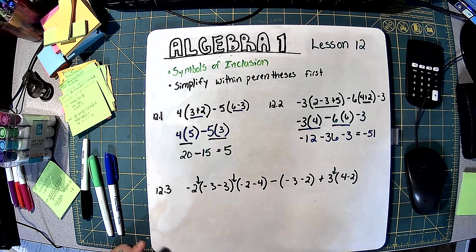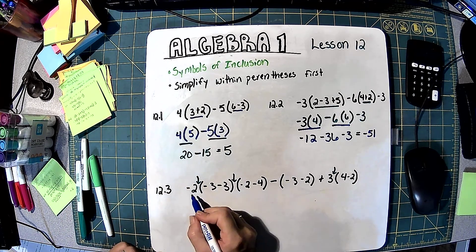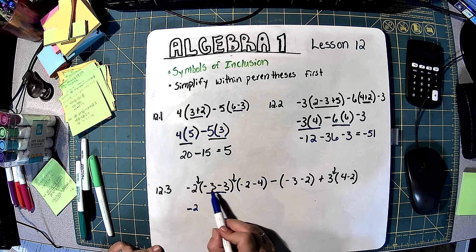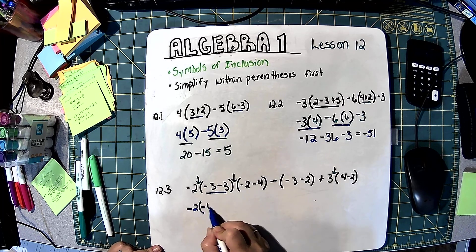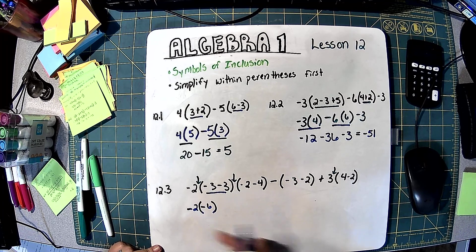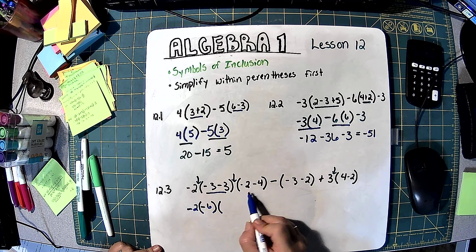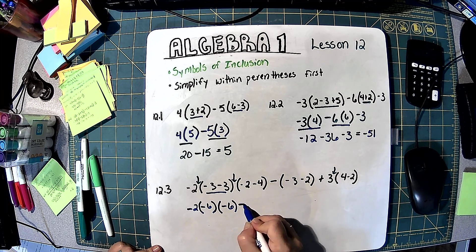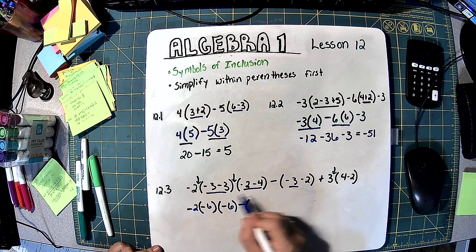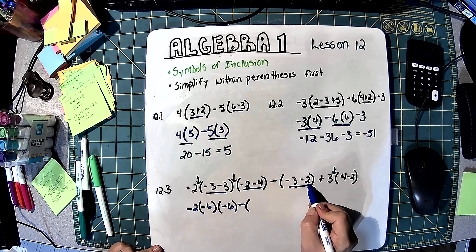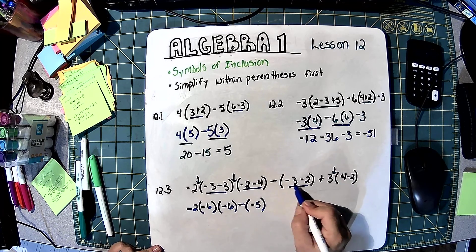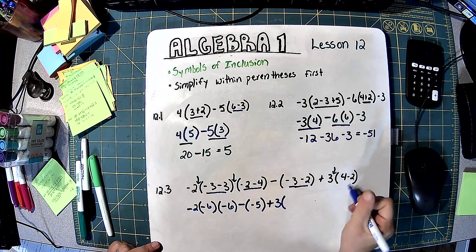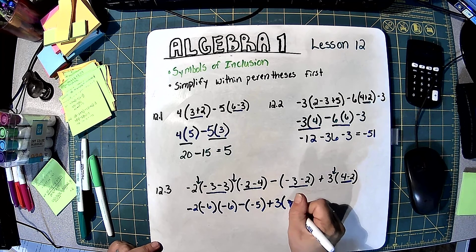We want to work what's inside the parentheses first. So we bring down negative 2. Then negative 3 and negative 3: I owe $3, borrow 3 more, now I owe 6 — keep it in parentheses. Negative 2 and negative 4 is also negative 6. Now we have this minus sign, and negative 3 and negative 2 would be negative 5. Plus 3 times parentheses, 4 minus 2, which would just be 2. So now I've simplified inside all of my parentheses.